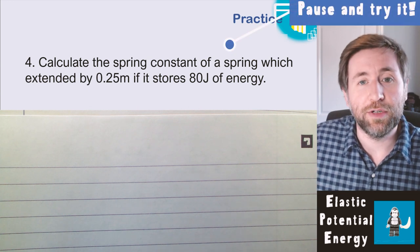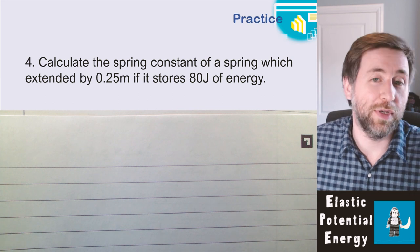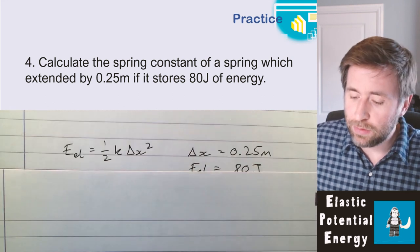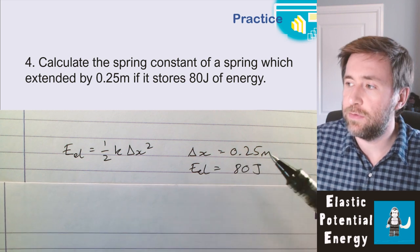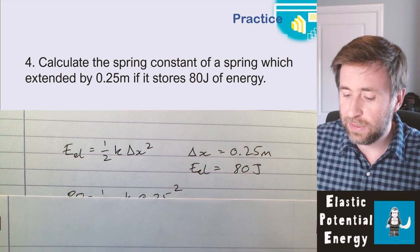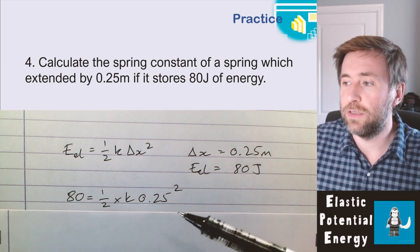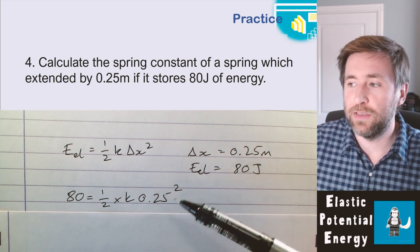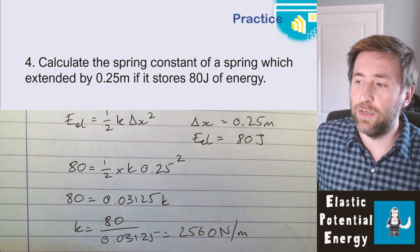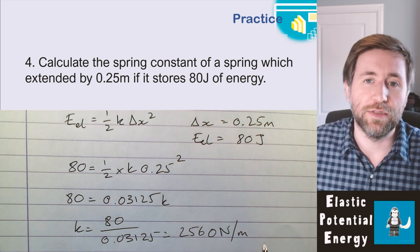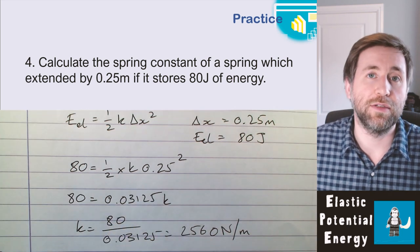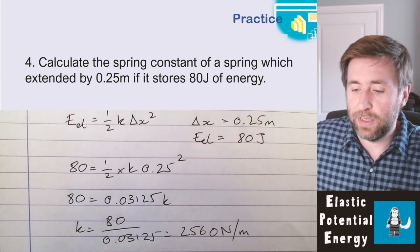These are the slightly more tricky ones because they involve some rearranging. Calculate the spring constant of a spring extended by 0.25 metres if it stores 80 joules of energy. Start by writing out the equation and identifying the data: the extension is 0.25 metres (already SI) and the elastic strain energy is 80 joules (already SI). Input all the numbers and then simplify — doing 0.25 squared times a half gives a value, then rearranging for k: 80 divided by that value gives k equals 2,560 newtons per metre. Make sure you show your working because you will get marks even if you make some errors.